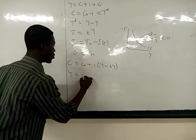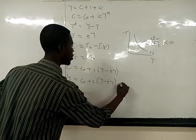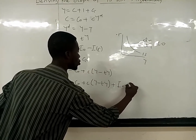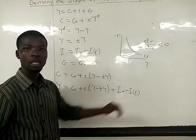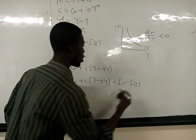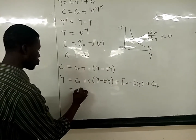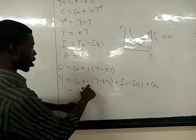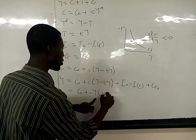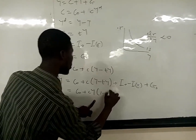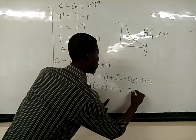Our Y equals C₀ plus cy(Y minus T) plus the investment function, which depends negatively on the interest rate, plus autonomous government expenditure. We can factor this: pulling out Y, we get cy(1 minus t), plus the rest of the variables.